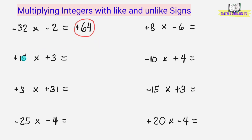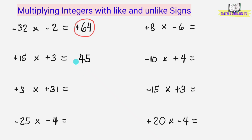Next, positive 15 times positive 3. Multiply natin yung numbers: 15 times 3 equals 45. Ang ilalagay nating sign ay positive, dahil pariho yung sign ng numbers na ating iminultiply. Ang answer ay positive 45.